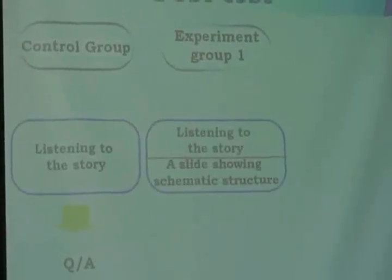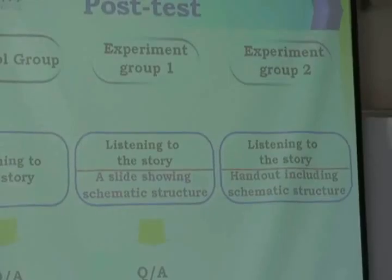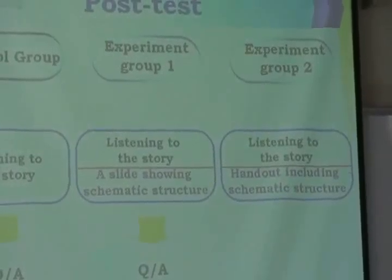In the pre-test, the researcher read the stories to all three groups, and then the students answered interpretation questions and literal text questions. In the post-test, the control group read the story and answered interpretation and literal text questions. Experiment group 1 read the story while a slide showing the schematic structure was projected on a screen, and then the students answered questions. Experiment group 2 listened to the story while handouts including the schematic structure were distributed to them; they could take notes on the handout while listening, and then answered interpretation and literal text questions.